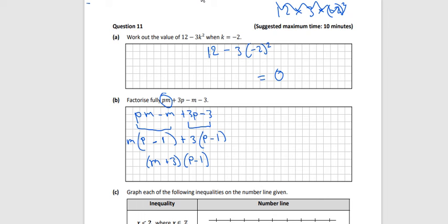Now what I did there was I put the PM and the minus M together just so I had an M to take out, and I put the 3P and the 3 together as well. So that's probably easier to do or to get your head around. If I just try and do it normally, so PM plus 3P minus M minus 3.